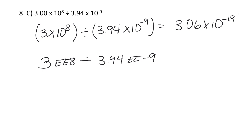If you don't have a calculator with the EE button, you'll definitely want to get one before unit three because we do light equations and everything is in scientific notation. It makes life so much easier when you're not having to put parentheses in and worry about forgetting them. Please get a scientific calculator with that EE button, or get a program you can add to your phone that has it.